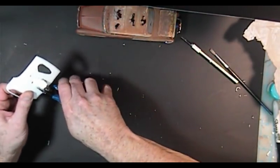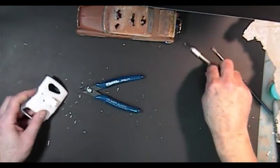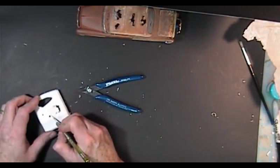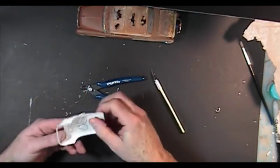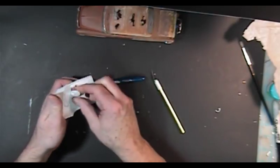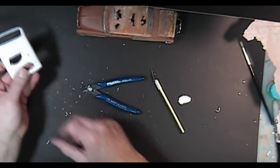Now, once you get through to here, again, just score it with your knife. Like so. You'll be able to just snap that piece right off. So there's your other hole, right?